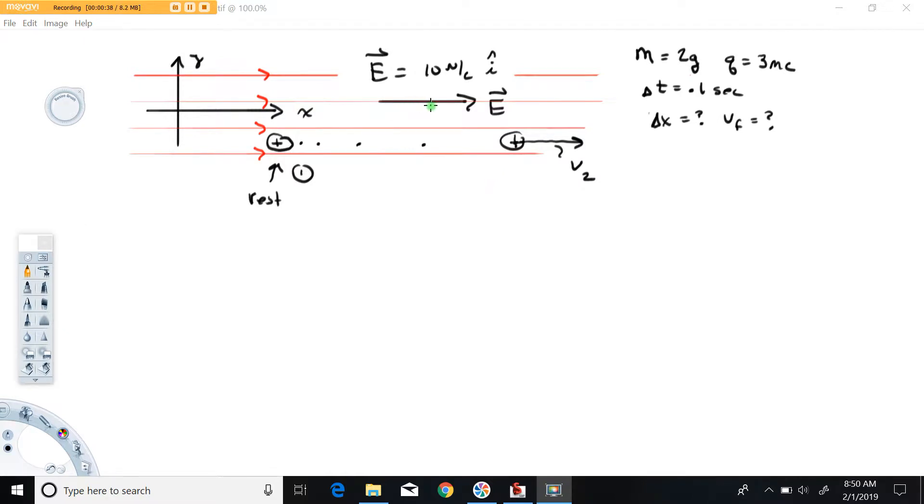indicating that this electric field vector is the same in magnitude and direction everywhere in this region. We're going to imagine that this two-gram particle that carries a charge of three millicoulombs is placed here in this field. For this example, I want to talk about how the electric field interacts with this particle only,